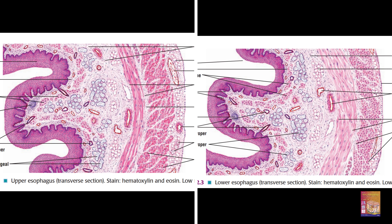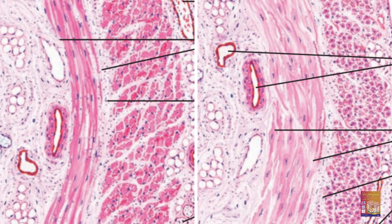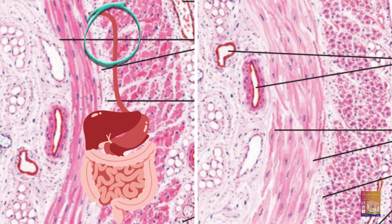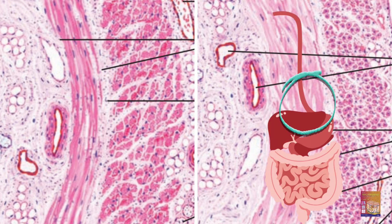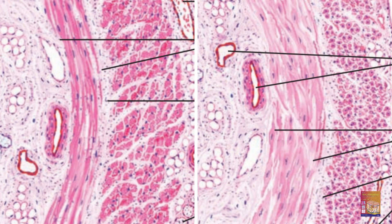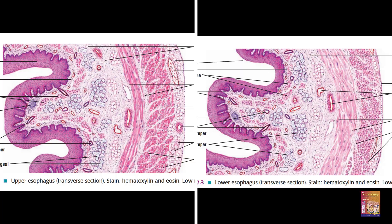Both sections show the inner circular and outer longitudinal layers. Zooming into the first picture, all the nuclei are situated peripherally in both layers, so this is obviously skeletal muscle — this section is from the upper third of the esophagus. In the second picture the nuclei are placed centrally in both layers — these are smooth muscle fibers without any doubt — so this section is from the lower third of the esophagus. And there you have it: a quick dive into the histology of the esophagus.